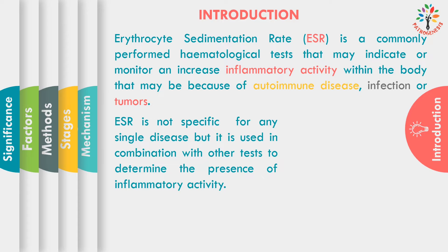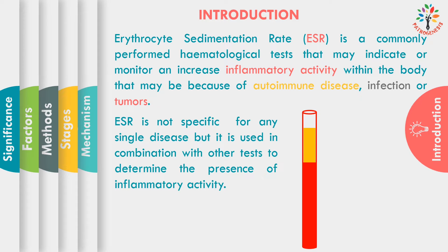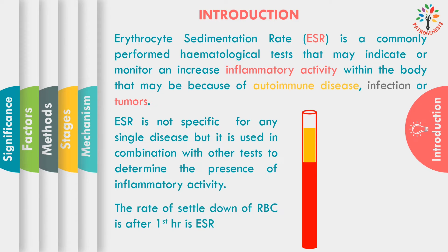When we place anticoagulated blood in a vertical tube, the RBCs will start to settle down slowly at the bottom. The rate of settling of RBCs after the first hour is known as ESR. ESR is measured in mm of clear plasma after the first hour.